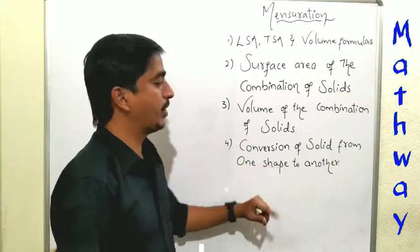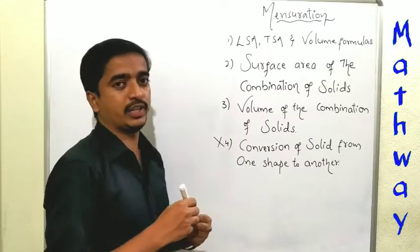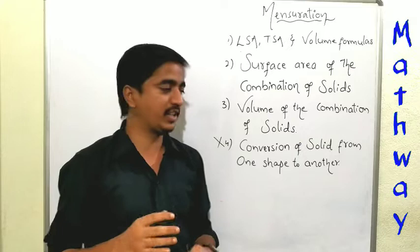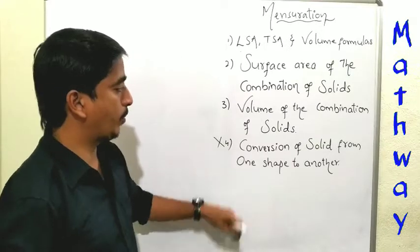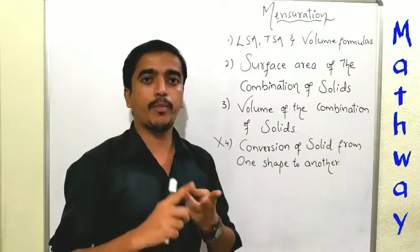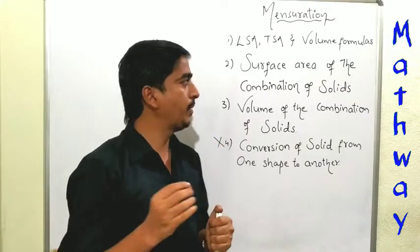And finally, conversion of solid from one shape to another shape. This topic is reduced. So one shape will reduce into another shape - the sphere, the cube, conversion of the same. Don't worry, we will discuss the topic. So mainly in chapter 10.1, 10.2, 10.3, there are example problems. We will discuss this chapter.